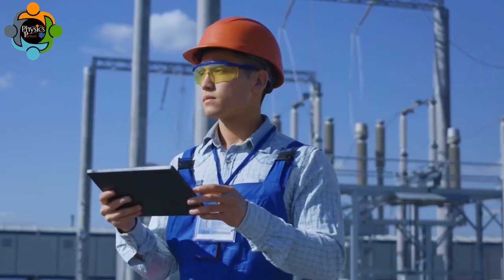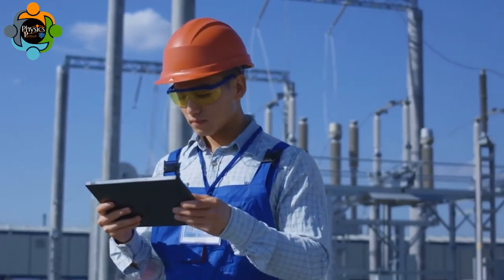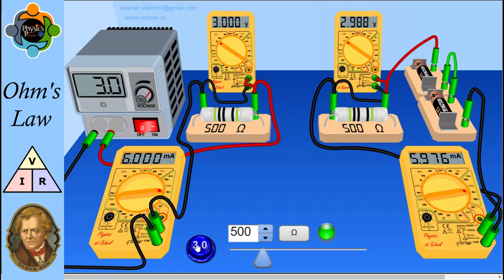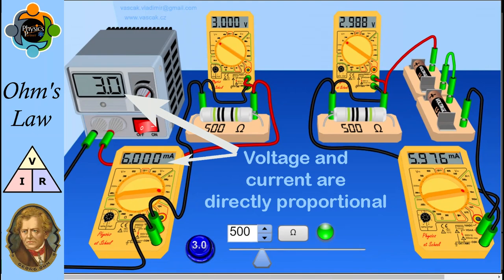For example, if you increase the voltage applied to a resistor while keeping its resistance constant, then the current flowing through it will increase proportionally. Similarly, if you decrease the resistance of the circuit while keeping its voltage constant, then more current will flow through it.